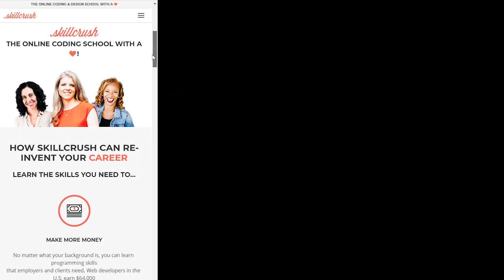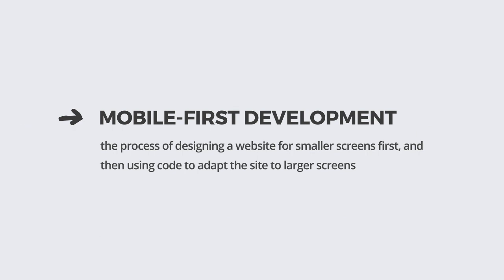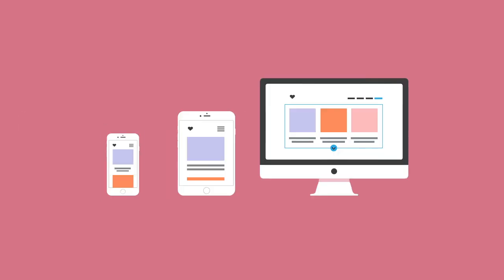Even when the screen size is small, like on your phone, users can still navigate and read the content. Often, web designers build a responsive layout using the mobile-first development approach. Mobile-first development is the process of designing a website to look great on smaller screens first, and then using code to adapt the site to larger screens. The main advantage of mobile-first development is that it keeps you focused on placing the most important content first. Starting with the smallest screen first forces you to decide what content must be there. Then, as you move up to tablet or desktop screen sizes, you can add on the less important nice-to-haves.